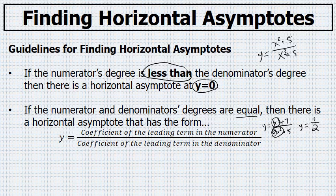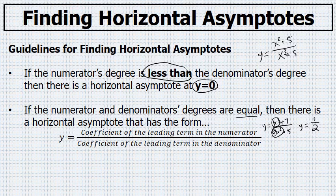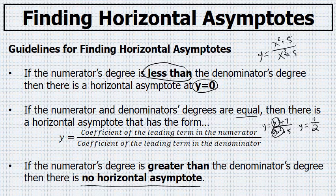We've discussed what happens if the numerator's degree is less than the denominator's degree, and what happens if they're the same. The third point is if the numerator's degree is greater than the denominator's degree — in this case there is no horizontal asymptote.